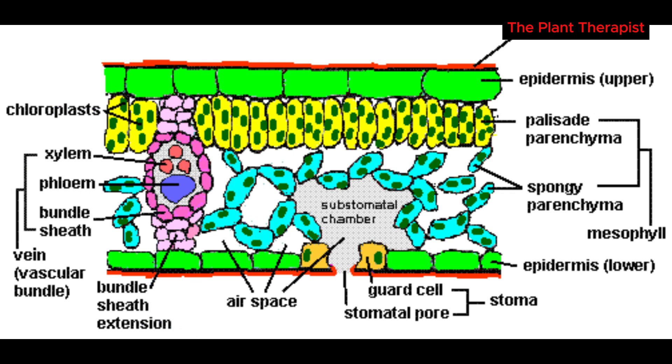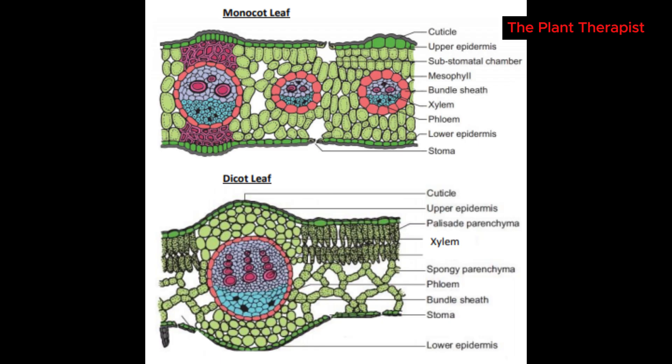Because veins run in many directions in the network, especially in dicots, it is common when examining a cross-section of a leaf under the microscope to see veins cut transversely, lengthwise, and at an angle, all in the same section.